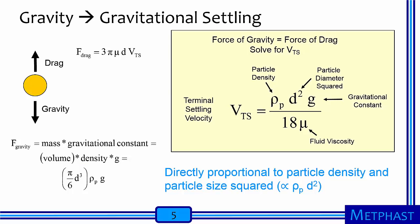Let's first consider the force of gravity, which leads to gravitational settling. Consider this orange spherical particle suspended in air. I know from experience that there is a force of gravity that pulls the particle to Earth. The force of gravity is equal to mass times gravity, which can be expressed as the volume of the particle times density of the particle times g, the gravitational constant. I can express volume of the particle, assuming that it's a sphere, as pi divided by 6 times diameter cubed. The vertical downward motion caused by gravity is resisted by the force of drag. Drag can be expressed as 3 times pi times air viscosity times particle diameter times terminal settling velocity. I can equate the force of gravity to the force of drag using Newton's second law.